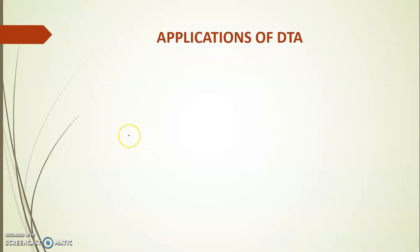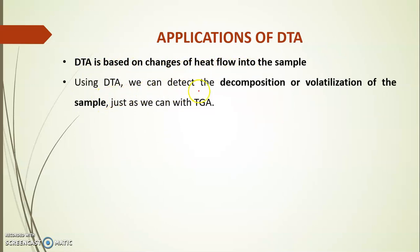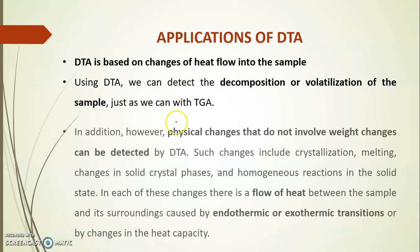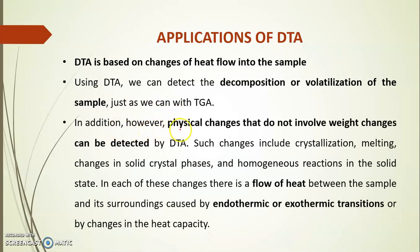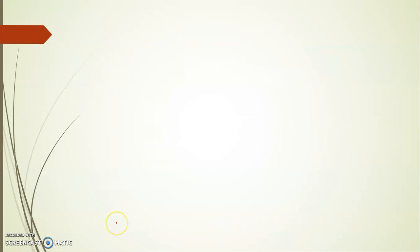Now next part is the application of DTA. DTA is based on changes of heat flow into the sample. Using DTA, we can detect the decomposition or volatilization of the sample just as we can with TGA. In addition, however, physical changes that do not involve weight changes can be detected by DTA. Such changes include crystallization, melting changes in solid crystal phases and homogeneous reactions in the solid state. In each of these changes, there is a flow of heat between the sample and its surrounding caused by endothermic or exothermic transitions or by changes in the heat capacity.